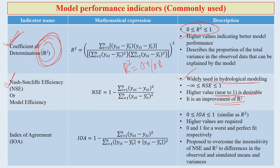NSE can be used largely for hydrological modeling. Another indicator is the Index of Agreement (IOA), where values lie between 0 and 1, similar to R². Higher values indicate better model performance — 0 for the worst fit and 1 for a perfect fit.